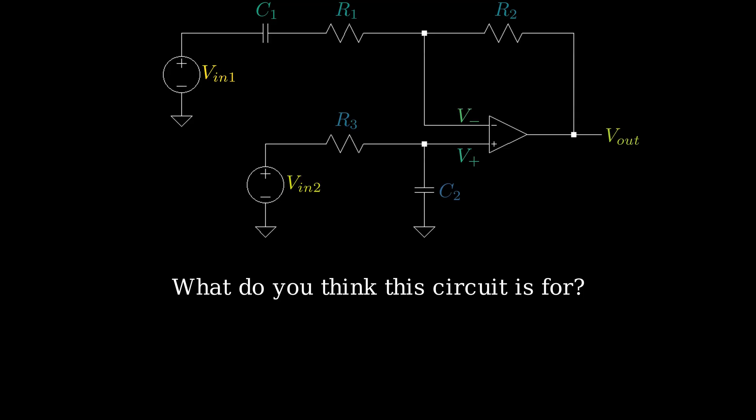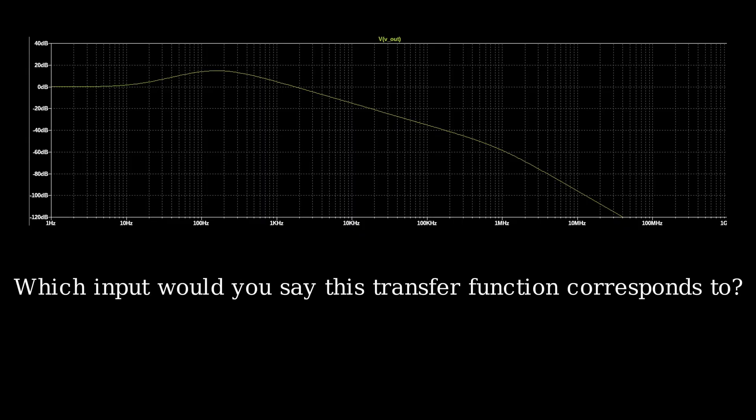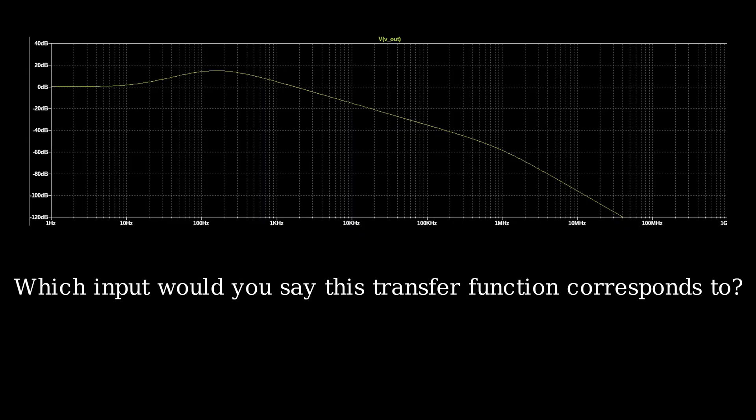The op-amp had a large output drive current, so it could comfortably drive the power pin of the DUT. The next question is to identify which input the following transfer function plot corresponds to. In this case, there's primarily low-pass behavior, so this transfer function is Vout over VIN2, aka the DC input.